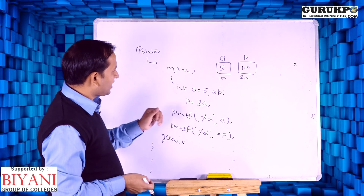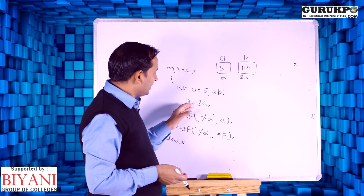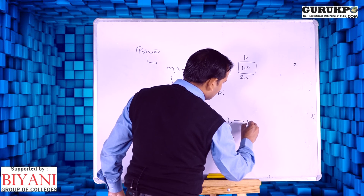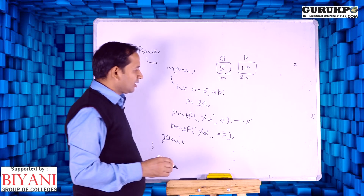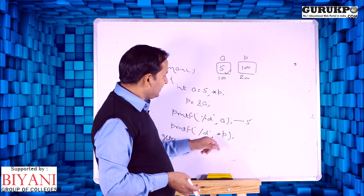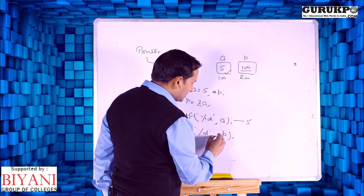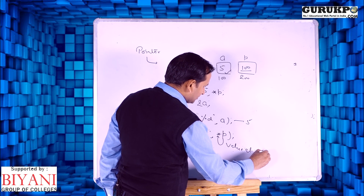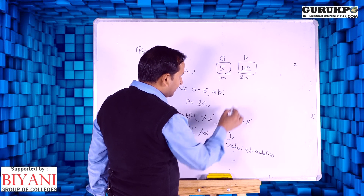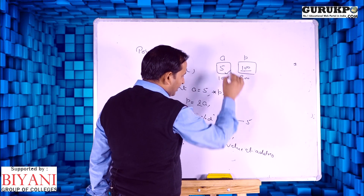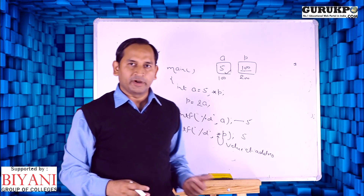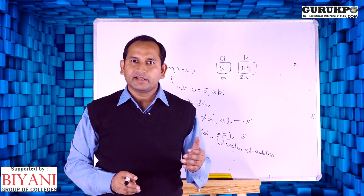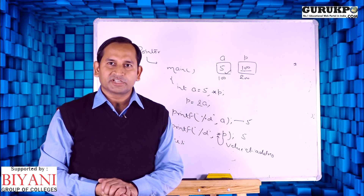In this example, the value of A is 5, the value of P is 100, and P takes the address of A which is 100. First, we print the value of A, which is 5. Using a pointer, we can print P — that is 100 — and asterisk P, where asterisk P is the value-at operator, meaning value at address. The value at address 100 is 5. So we can easily print values using a pointer. In the next lecture, we will discuss pointers and arrays. Thank you so much for watching this video.